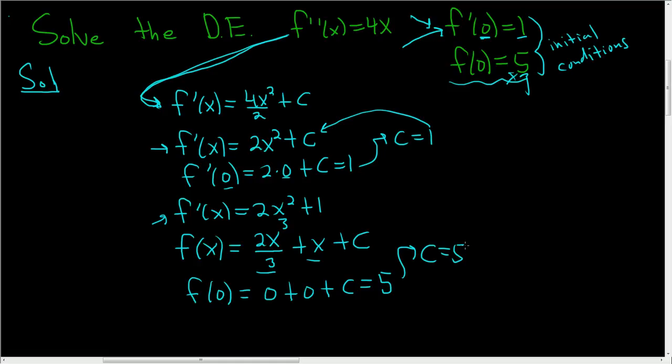And so the final answer is f of x equals 2x cubed over 3 plus x, and then you just take the c and plug it back in. So plus 5. Let's go over that again because we did it really fast. I kind of rushed through it.